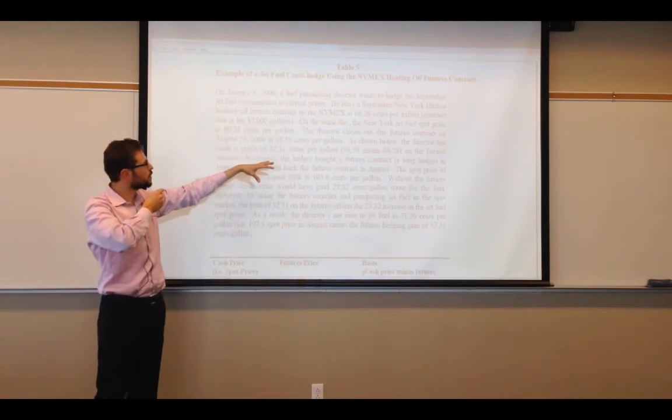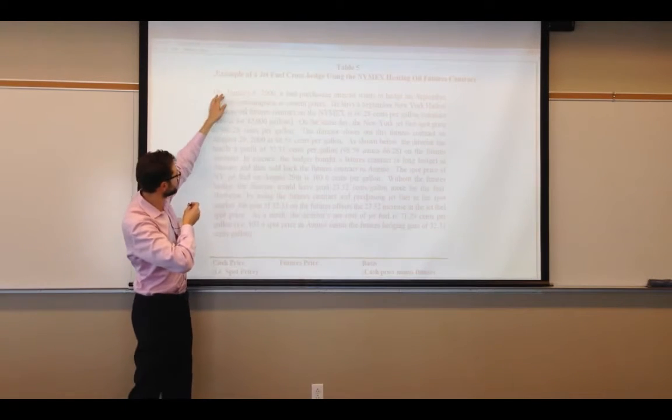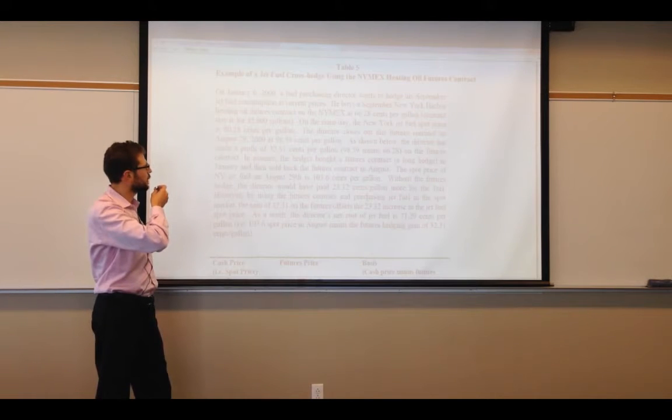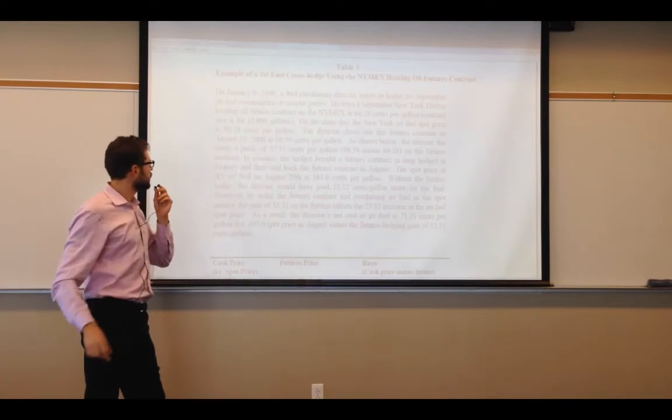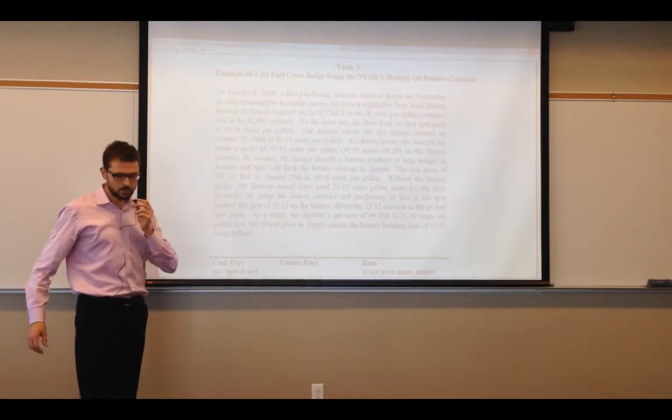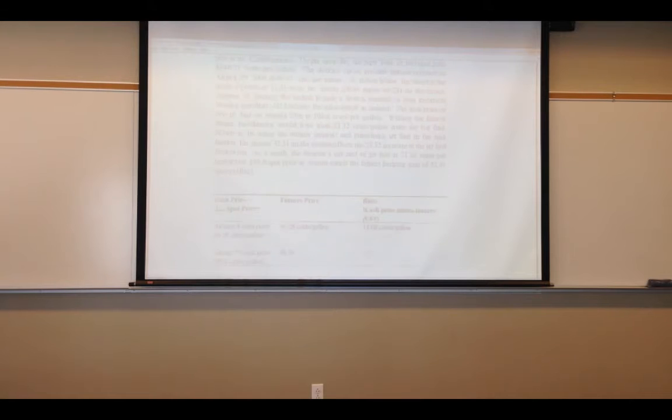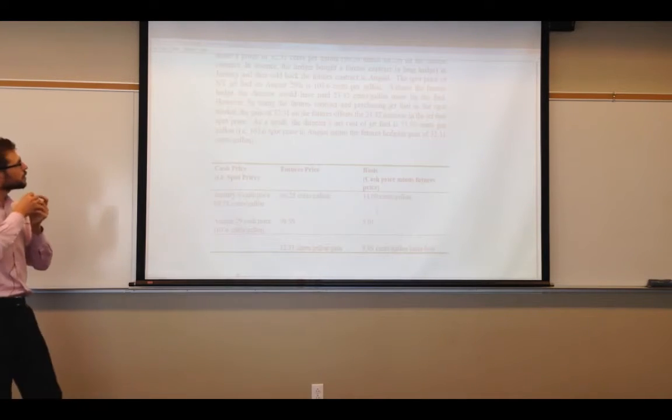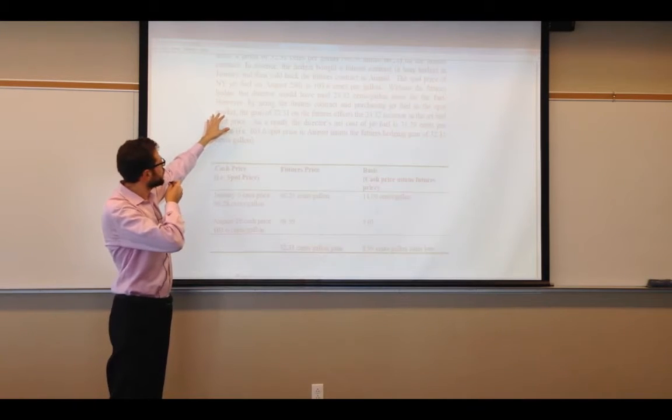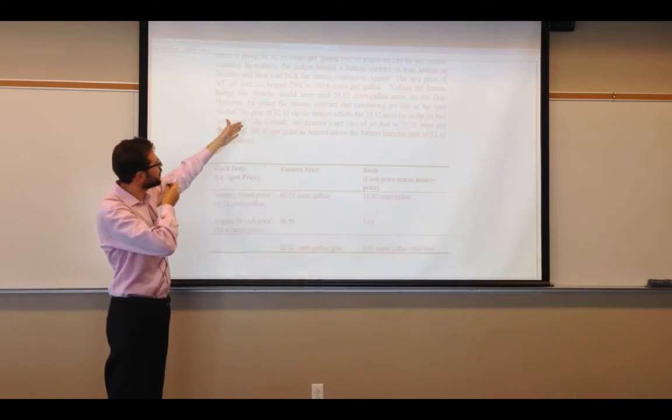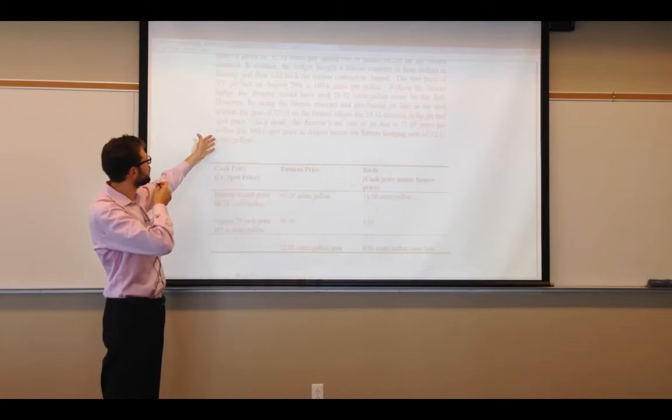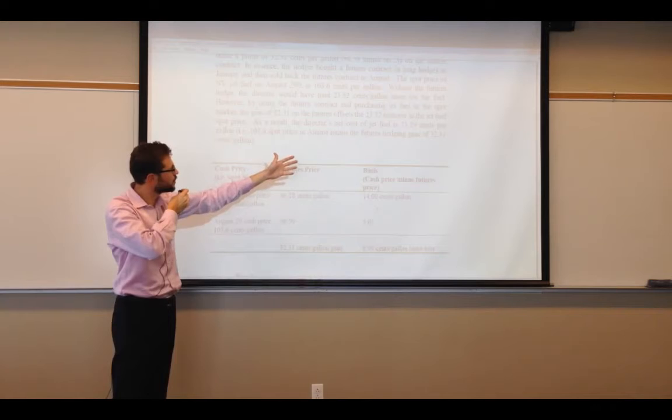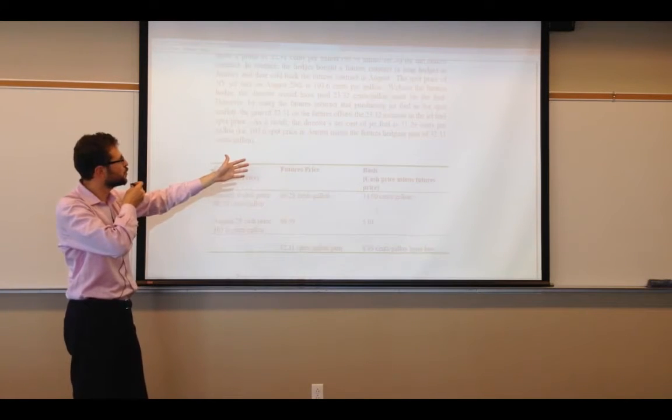So what does he do? He closes out his future contract on August 29, 2000. He bought January 6, closed out August 28, nine months later almost exactly. And now we're looking at a profit of 32.31 cents per gallon on the futures contract. So what happened, if you look, we're going to see more now in detail of the example here. So what happened was that the spot price of Jet fuel on August 29 was 103.6. And without the future hedge, the director would have paid 23.32 cents a gallon more for the fuel. However, using the future contract and purchasing Jet fuel in the spot market, the gain of 32.31 on the futures offset the 23.32 increase in the jet fuel price.